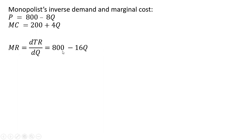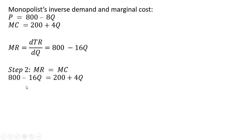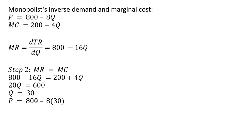As we learned before, marginal revenue is 800 minus 16q. Setting marginal revenue equal to marginal cost and solving for q by dividing through by 20, q equals 30 — the profit-maximizing output. Plugging 30 units into the inverse demand, the profit-maximizing price is $560.